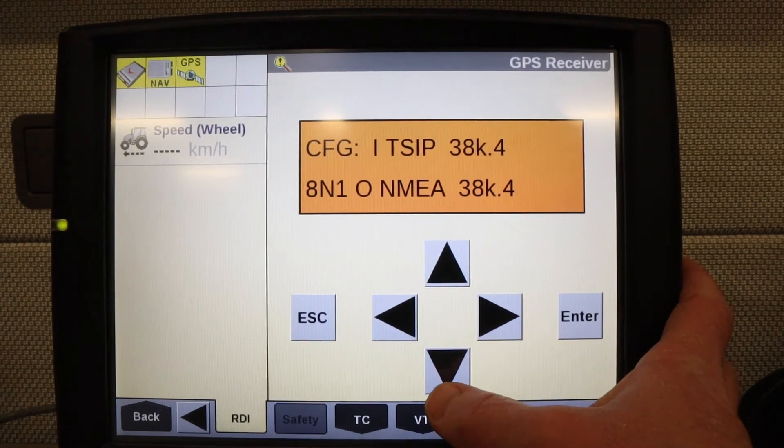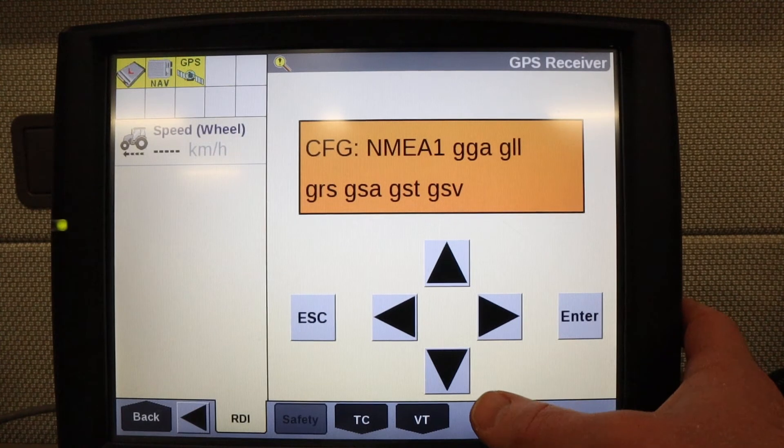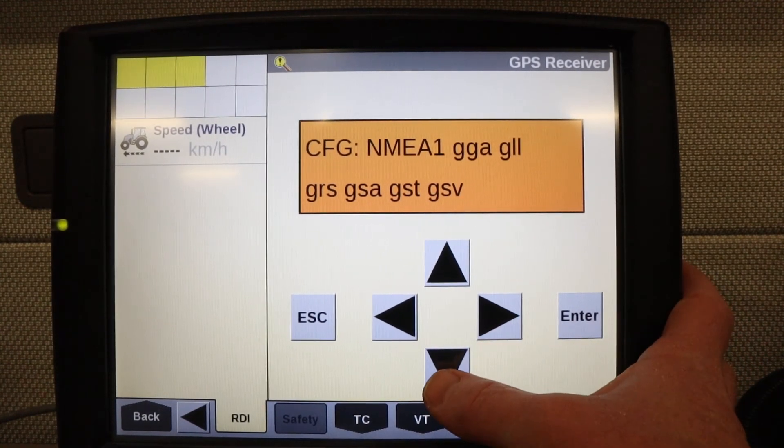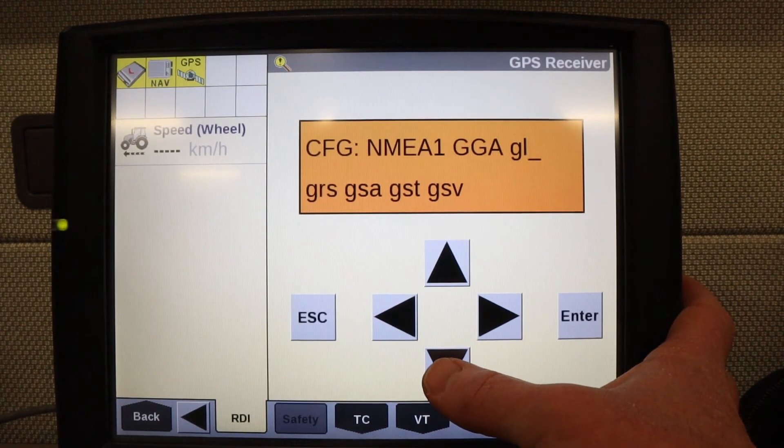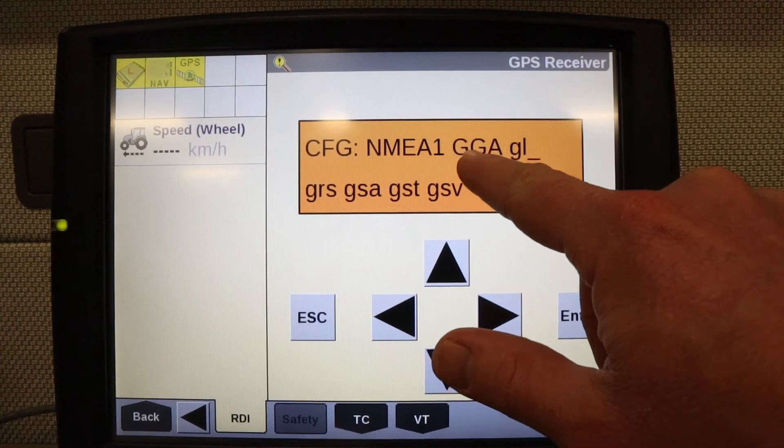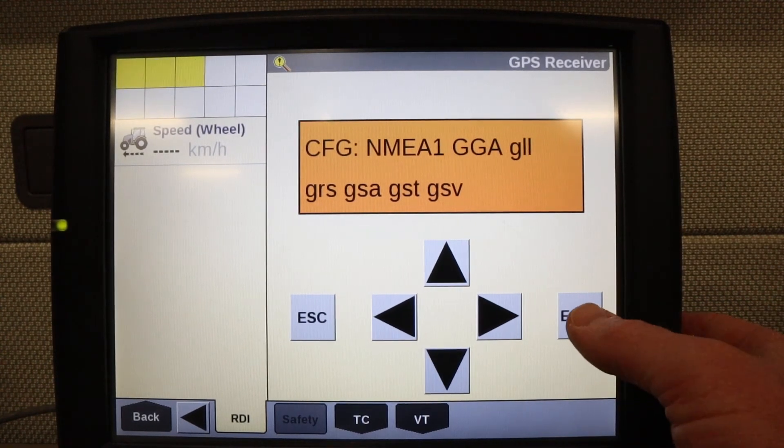Now we're going to press the down arrow to get to the NEMA 1 message selection screen. Press the right arrow to get a cursor, and then the up and down arrows to change the setting. The only setting I need here in capital letters is the GGA message. Once I've done that, I can press enter.